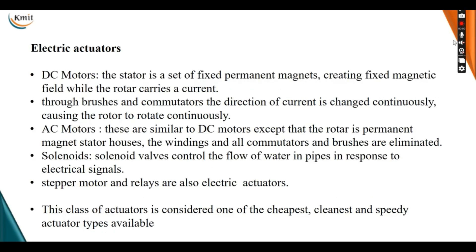Electric actuators consist of DC motors, AC motors, solenoids, stepper motors, and relays. In DC motors, the stator is a set of fixed permanent magnets creating fixed magnetic fields while the rotor carries a current. Through brushes and commutators, the direction of current is changed continuously, causing the rotor to rotate continuously. AC motors are similar to DC motors except that the rotor is a permanent magnet; the stator houses the windings and all commutators and brushes are removed in AC motors.